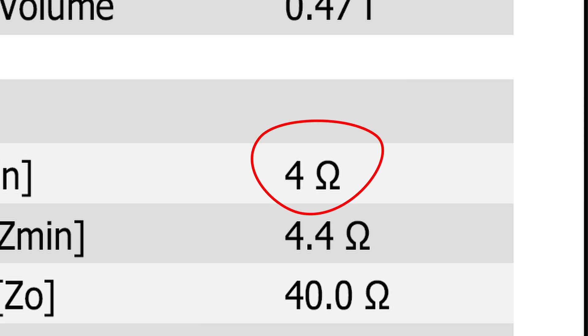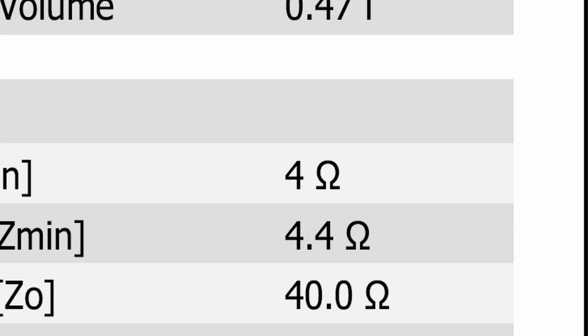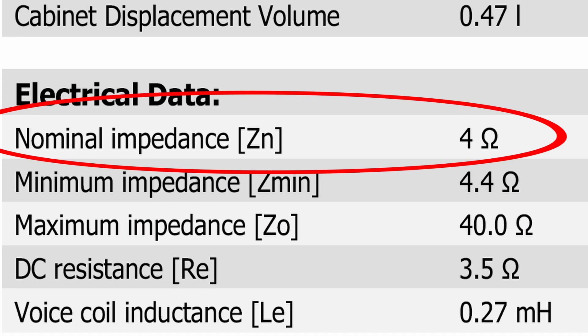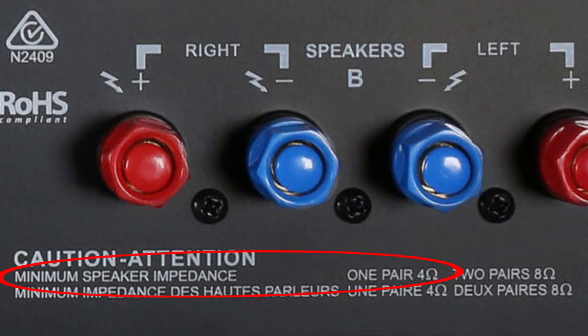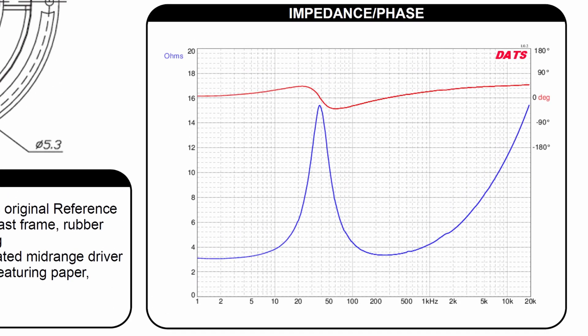If you are new to DIY Audio, Electrical Engineering, or you are not subscribed to ElectroBoom's channel, you probably think that the number found on the spec sheet of the speaker is the actual impedance. Your rookie mistake is forgiven, but know that the nominal impedance — the number previously mentioned — is only useful to help you choose a matching amplifier for that speaker. Impedance is actually a graph because the impedance varies with frequency, and this graph gives a lot of information about the speaker.